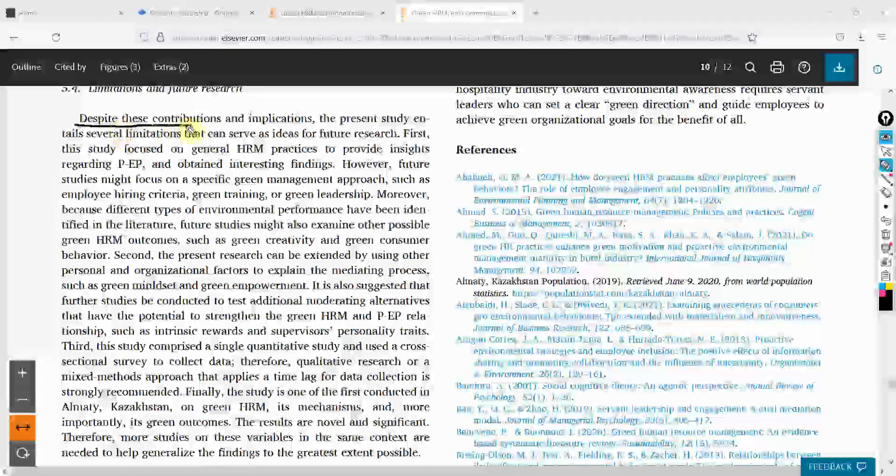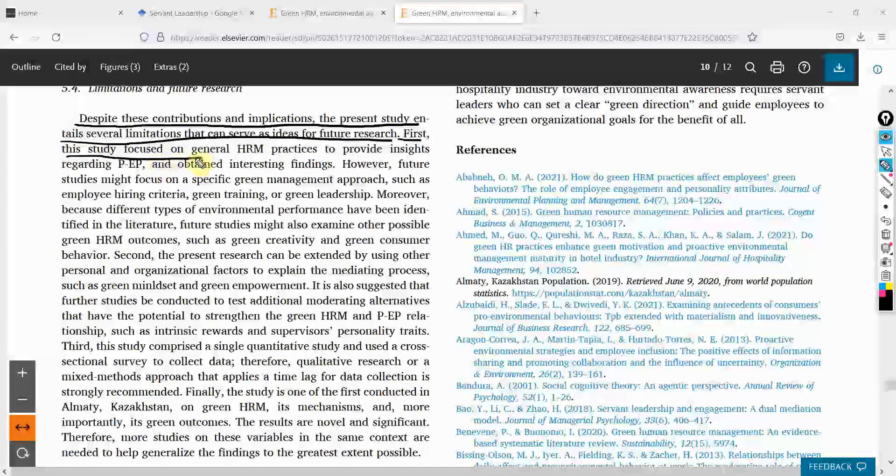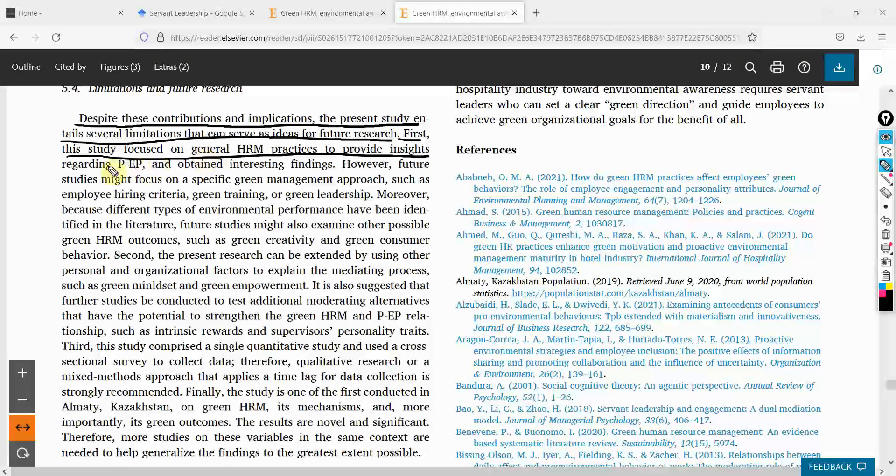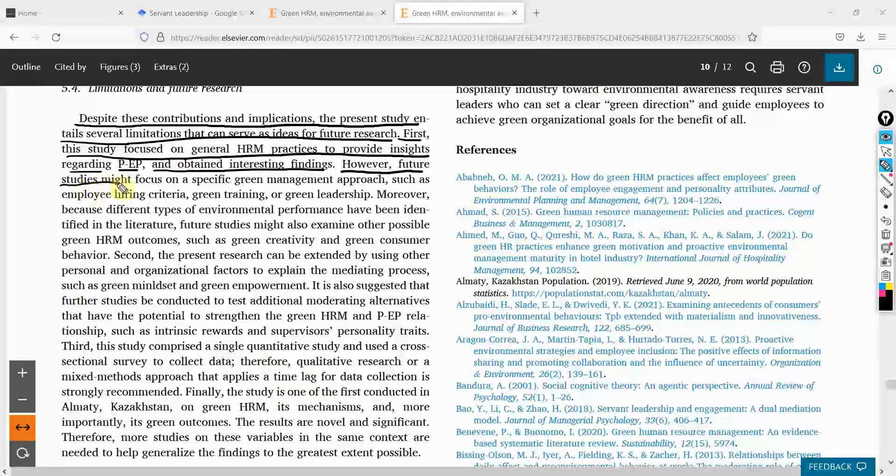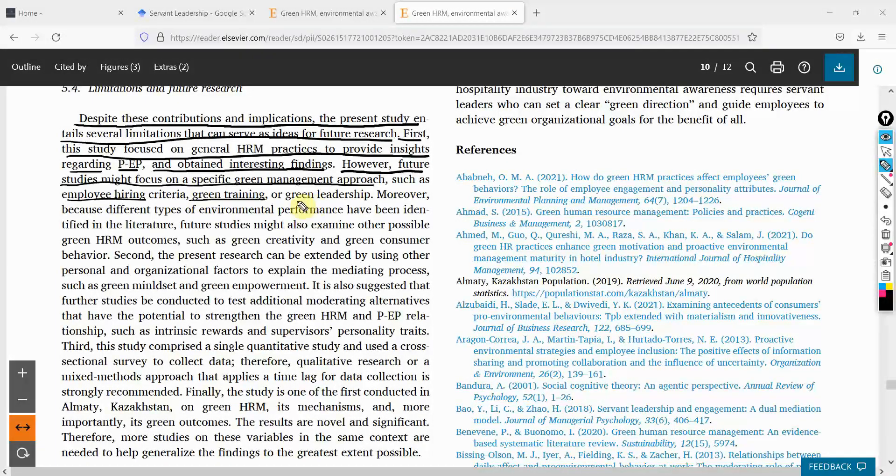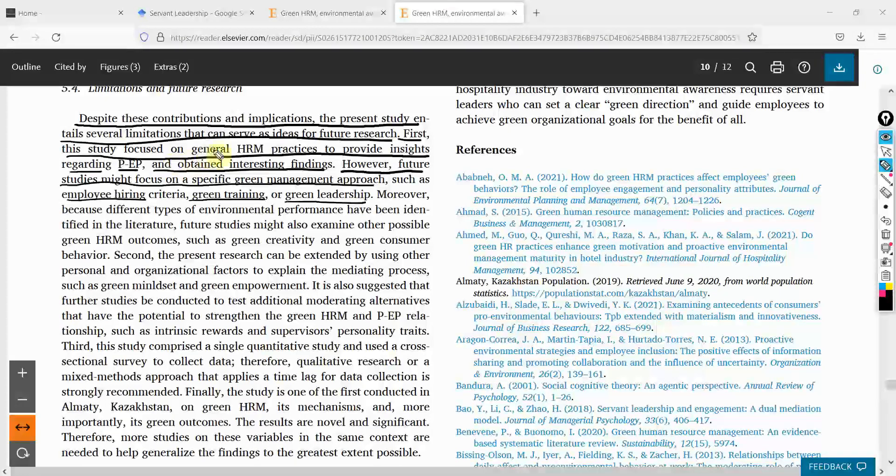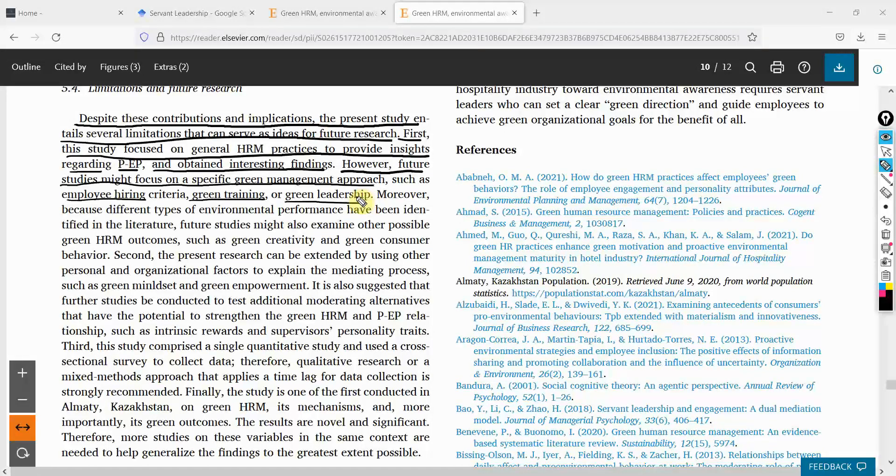Limitations and future research directions, here it is. Let me increase the size to have a look. Despite these contributions and implications, the present study entails several limitations that can serve as ideas for future research. First, this study focused on general HRM practices, however future studies might focus on specific green management approaches such as employee hiring criteria, green training, green leadership. Now the focus of this study was more or less on general HR practices. Now they are recommending some more HR practices. Let's look at the model first and then we are going to come back here.